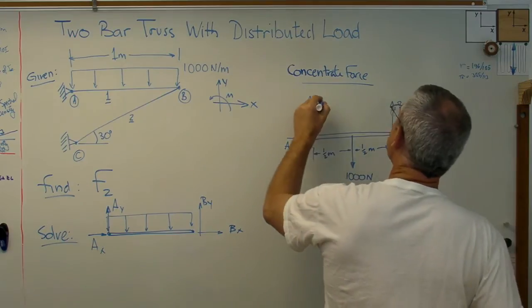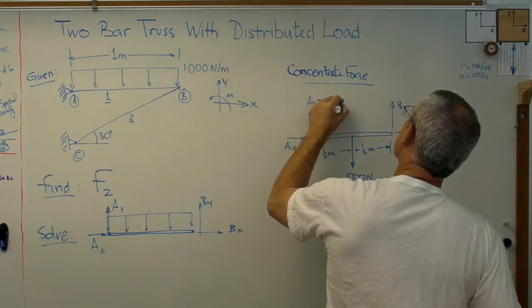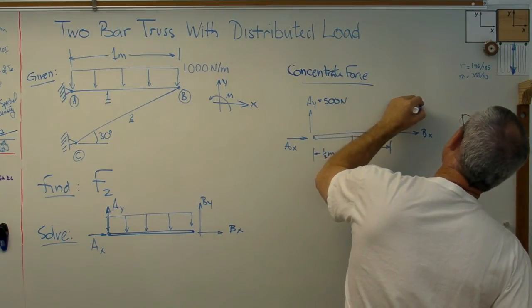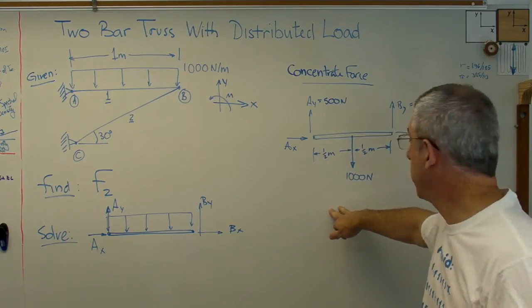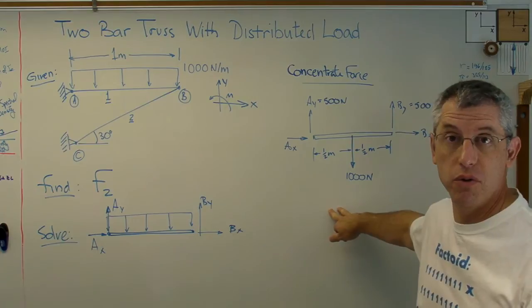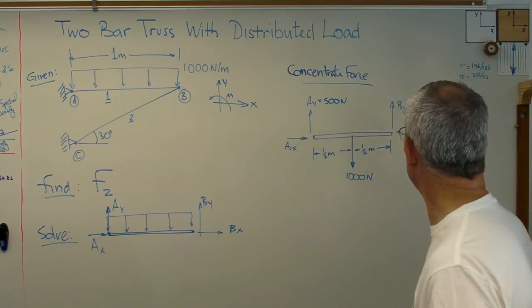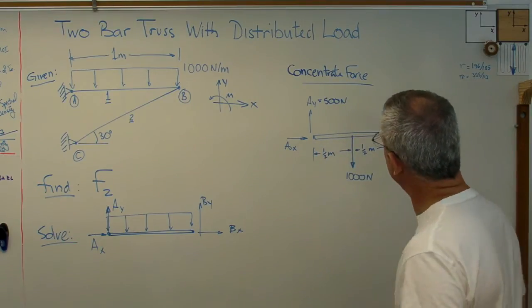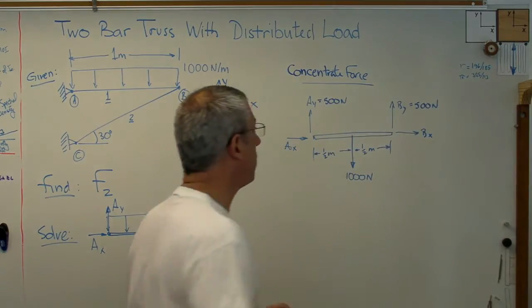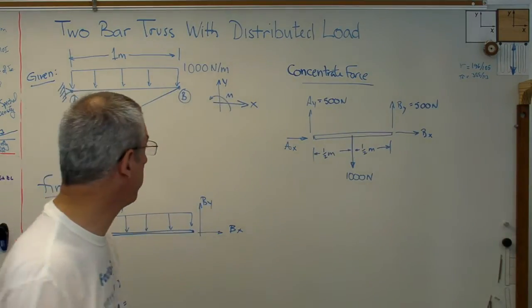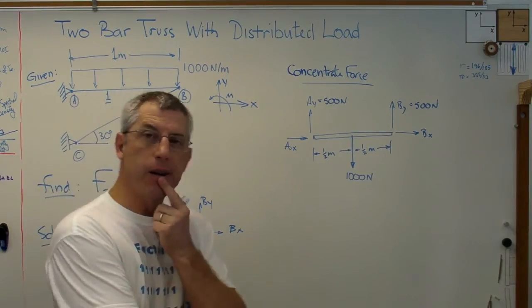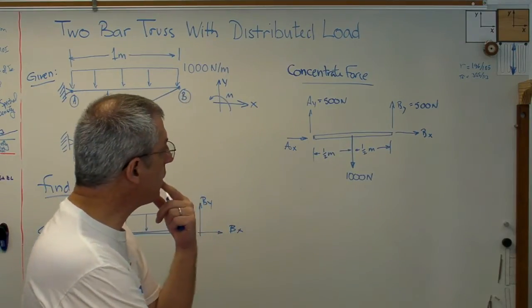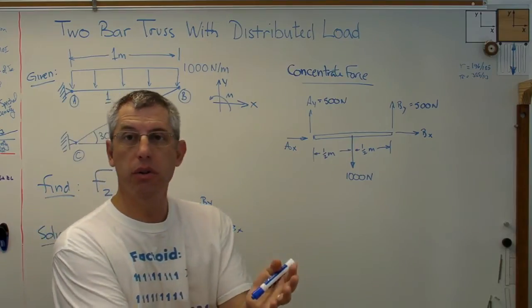It's pretty obvious from symmetry that each vertical component is 500 newtons. I'm not going through the equations of equilibrium, but you can verify these answers. I know the vertical components but not the horizontal components. If I did, I could figure out force 2. What do I do from here? I'm going to use the method of joints, something we do in statics a lot.